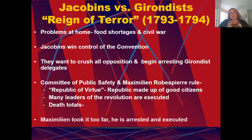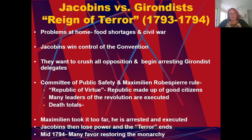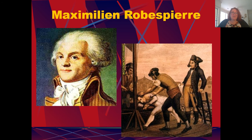The death tolls were enormous. Maximilien Robespierre took things really too far and was ultimately arrested and executed. The Jacobins lose power and the Terror ends. By mid-1794, many are in favor of restoring the monarchy.